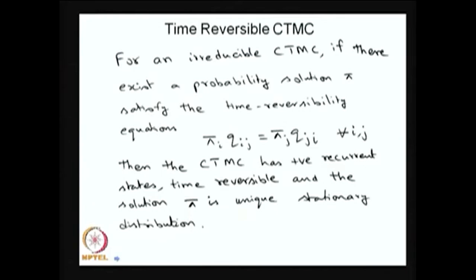The way I have explained the time reversible concept in the DTMC, the CTMC also has the time reversible concept. The time reversibility equation is: π_i × q_ij = π_j × q_ji.